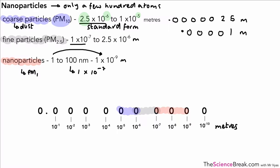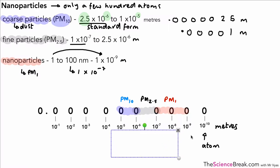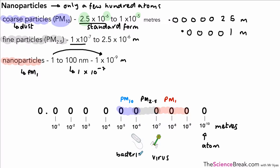Here's a scale showing the different sizes of things. Our PM10 coarse particles or dust are in the region of 10⁻⁵ to 10⁻⁶, PM2.5 fine particles come next, and nanoparticles occupy 10⁻⁷ down to 10⁻⁹. For reference, atoms are around 10⁻¹⁰, viruses approximately 10⁻⁷ meters, and bacteria around 10⁻⁶ meters. These are rough sizes, but you can see how particles compare with bacteria, viruses, and atoms.